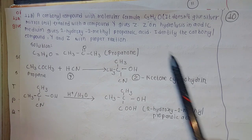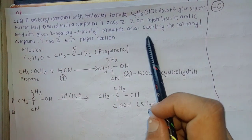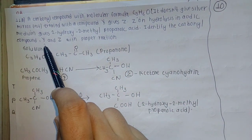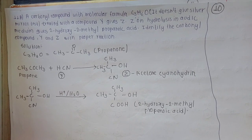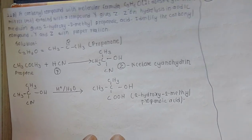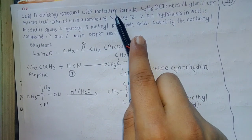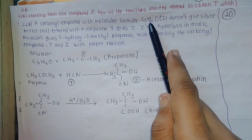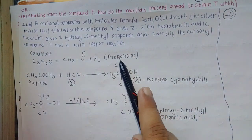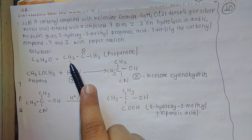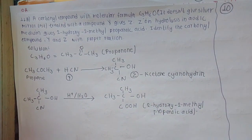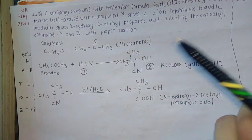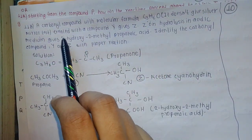What we want to identify is the carbonyl compound - which carbonyl compound is present, and that is why, with proper reactions, we identify Z. The silver mirror test confirms the ketone group.